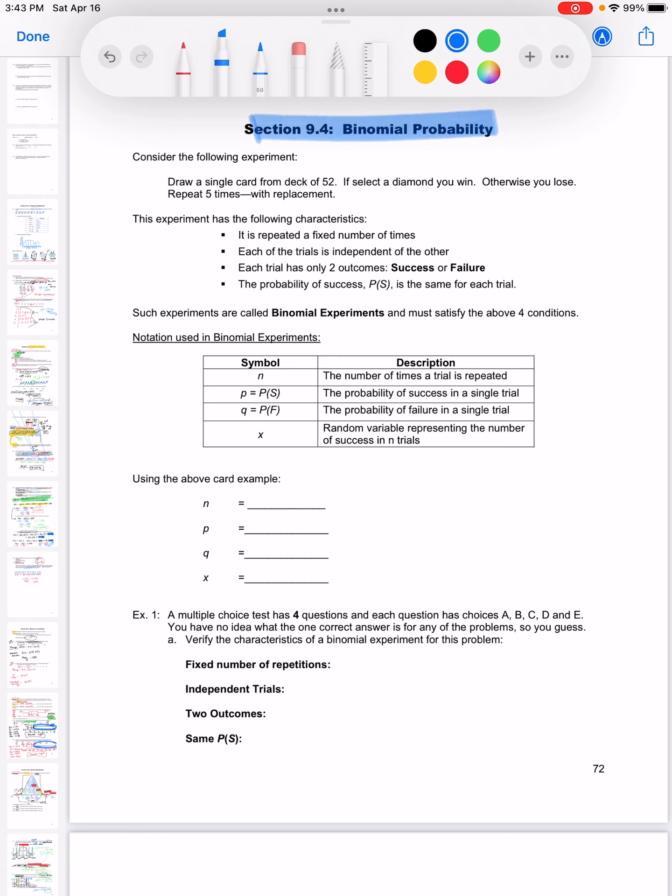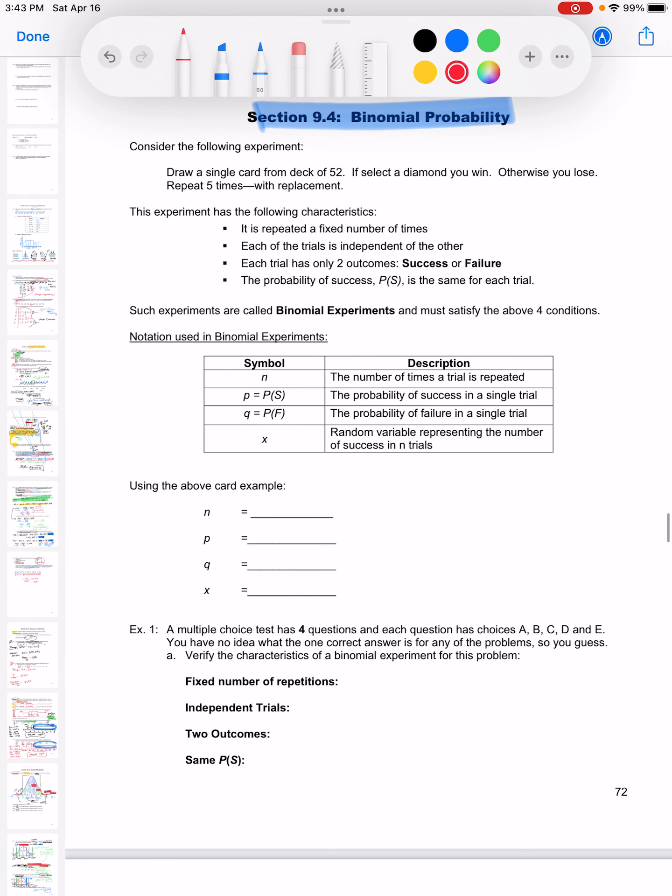To be a binomial probability, we have to have some really specific criteria met. We have to repeat an experiment a set number of times. The trials or those experiments have to be independent, which means one doesn't affect the other. Like rolling a dice - if I roll a dice and roll a five, I can still roll a five the next time or I might not, but whatever I rolled the first time has no effect on the second time or third time I do it.